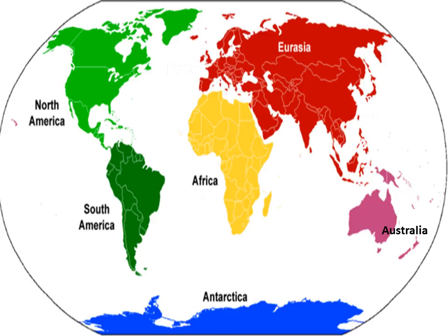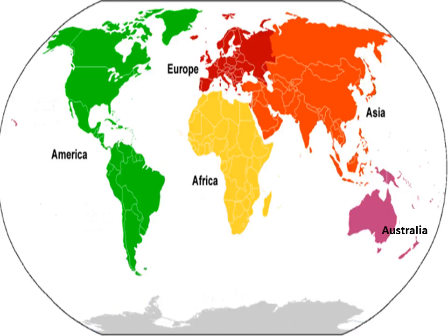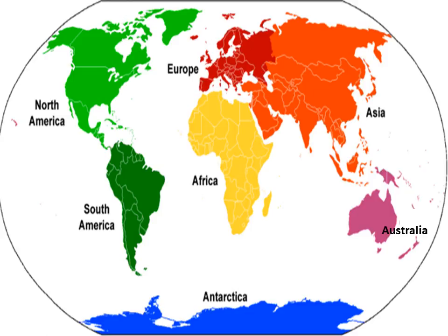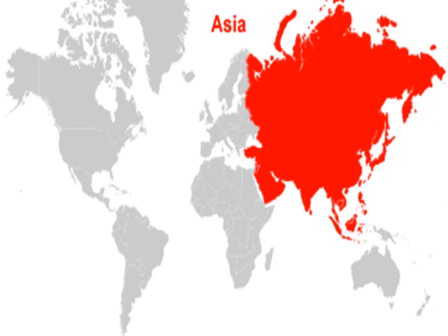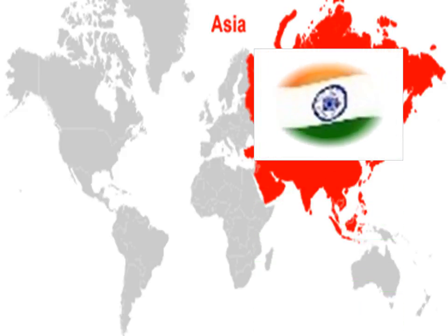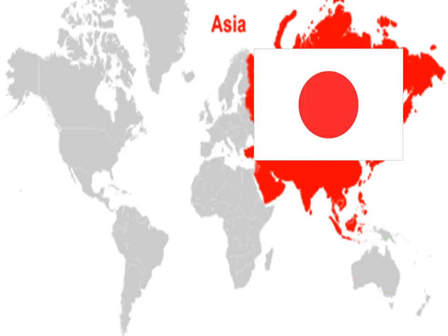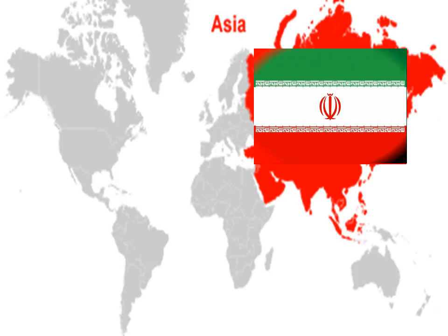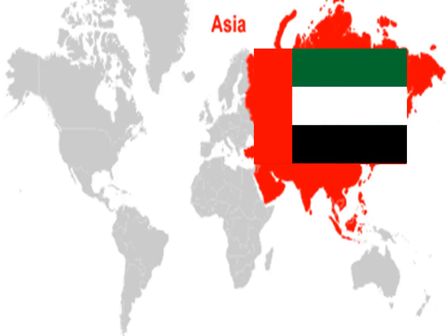There is no geographical boundary separating Asia and Europe. The two continents form a large landmass called Eurasia. Some of the countries in this continent are India, Japan, China, Pakistan, Iran and UAE. China has the world's largest population followed by India.